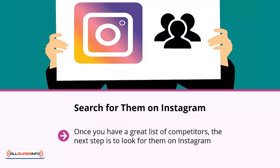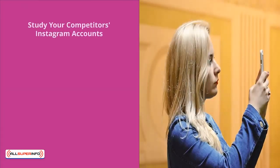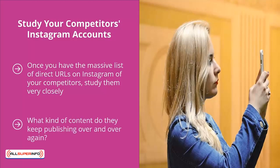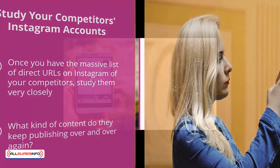Once you have a great list of competitors, the next step is to look for them on Instagram. Do they have Instagram accounts? If they do, come up with a big list of competitors there as well. Once you have a massive list of direct URLs on Instagram of your competitors, study them very closely. Take note of the quality of their Instagram profile, pay attention to their content strategy — what kind of content do they keep publishing over and over again? You can tell that they publish content using the same themes or topics. Take note of these. Most importantly, pay attention to the hashtags they're using.